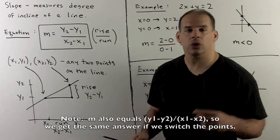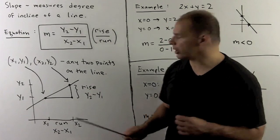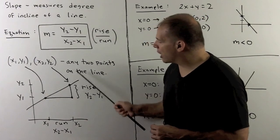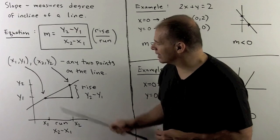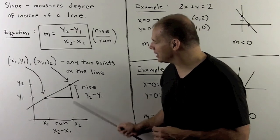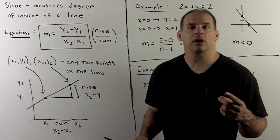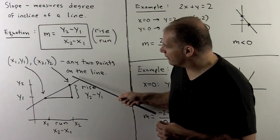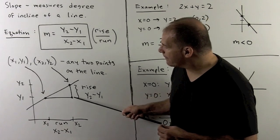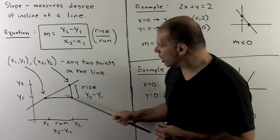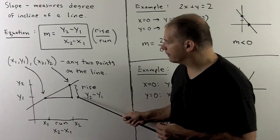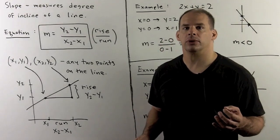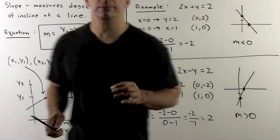For the picture: we draw a line, we draw our points, we put in the right triangle with legs parallel to the x and y axes. The rise, the change in y, is the vertical leg — the length of that. The run is the length of the horizontal leg. The slope is the ratio of those lengths. Now for some examples.